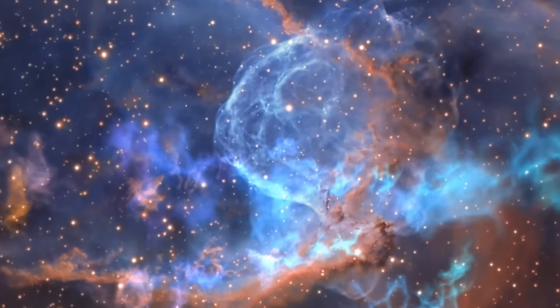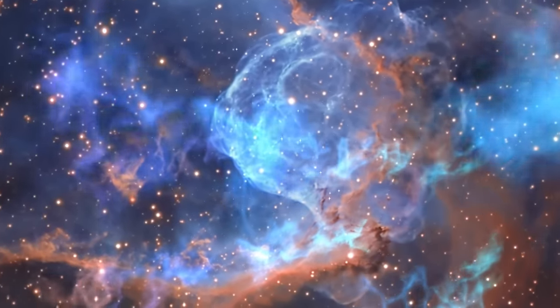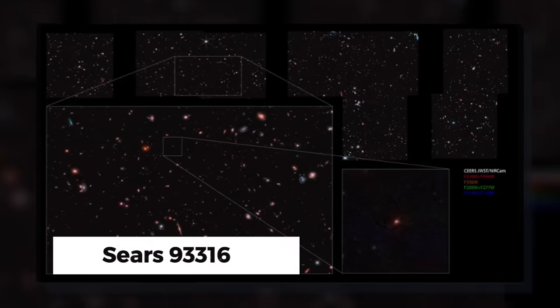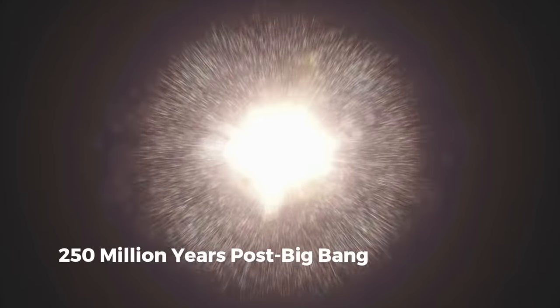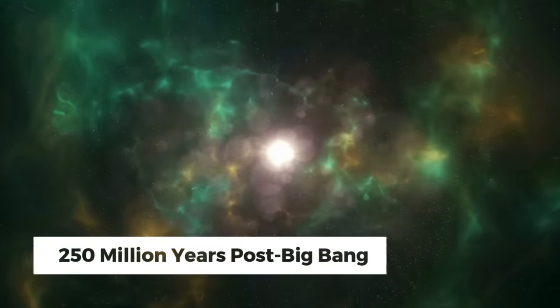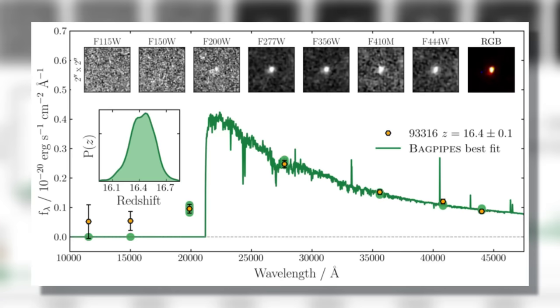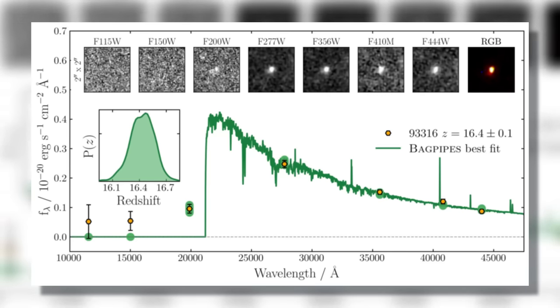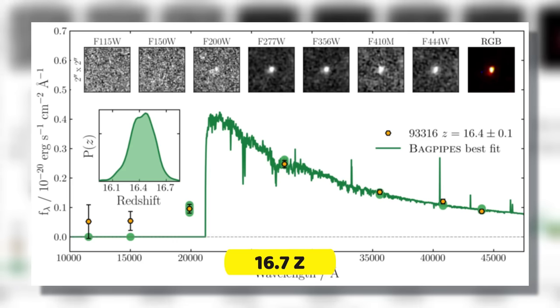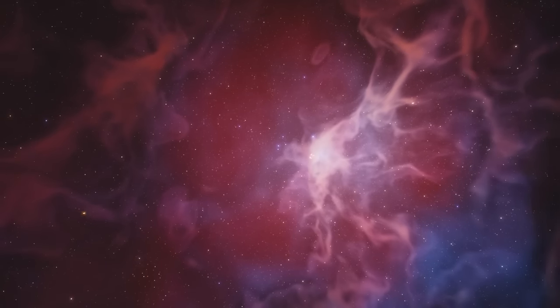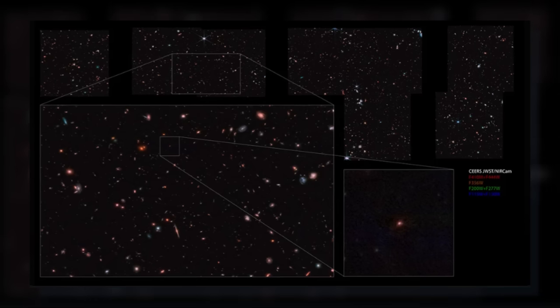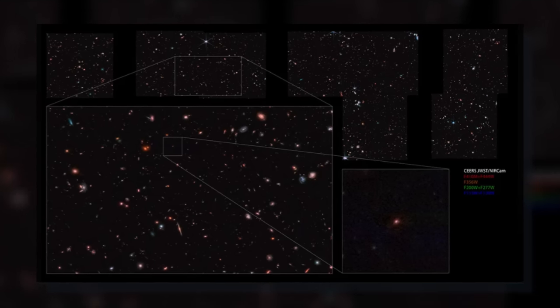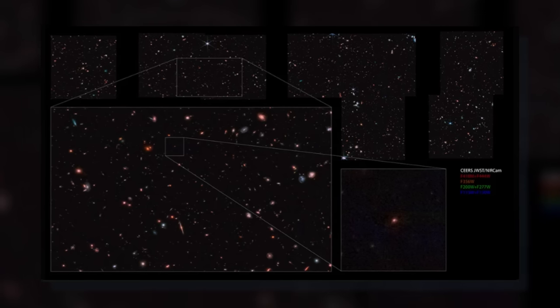One standout in the vast landscape of cosmic enigmas is Schrodinger's Galaxy, also referred to as SERS 93316. This galaxy is incredibly ancient, originating just 250 million years post-Big Bang. What truly puzzles researchers are its inconsistent redshift measurements. In one observation, the galaxy displayed a redshift of 16.7Z, signaling extreme age. Yet, compared to nearby celestial bodies, a different redshift was recorded, implying that SERS 93316 might exist simultaneously in two separate locations and timeframes.